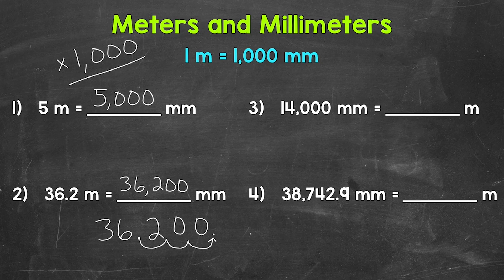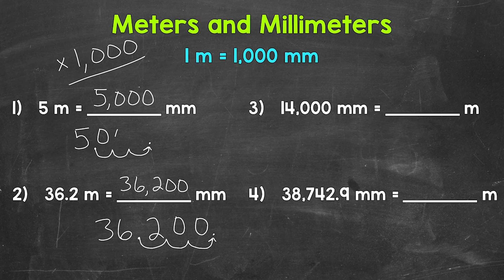Let's jump back to number one real quick and see if moving the decimal gets the same answer. Let's see if we still get five thousand. So let me rewrite five — the decimal comes after a whole number — and we'll move it once, twice, and three times to the right. Fill these gaps with zeros, and we get five thousand that way as well. So to recap, when we go from meters to millimeters, we multiply by one thousand, and we can do that by moving the decimal three times to the right.